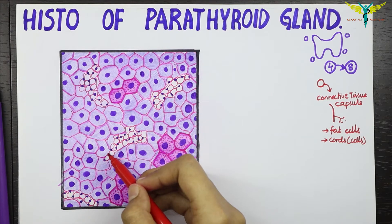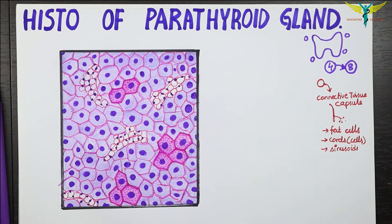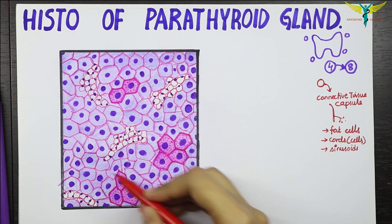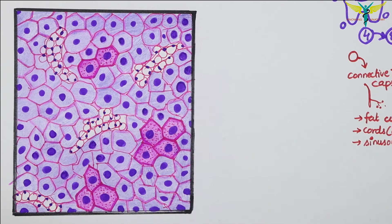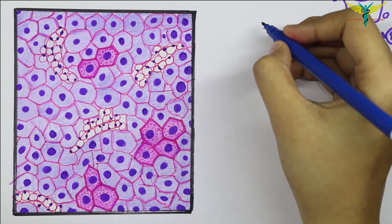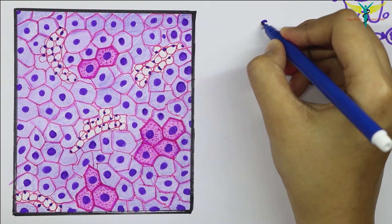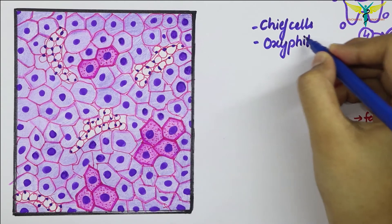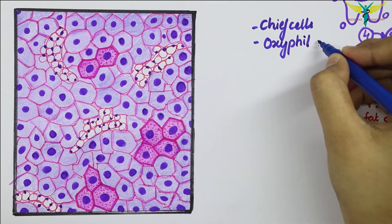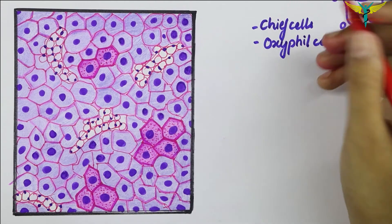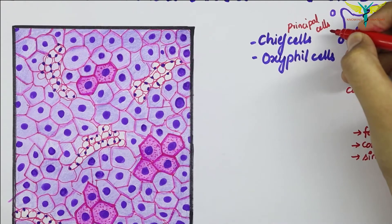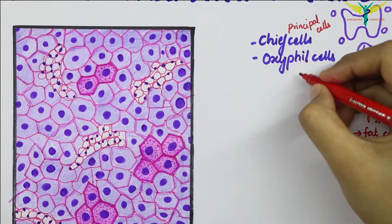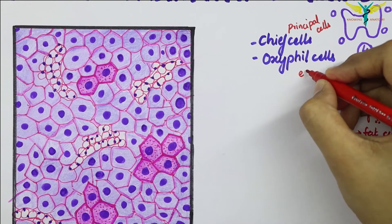The cells of the parathyroid glands are mainly of two types. The first type are called chief cells, also known as principal cells. The second type are called oxyphil cells, also known as eosinophil cells.